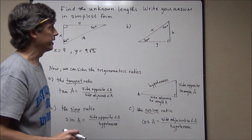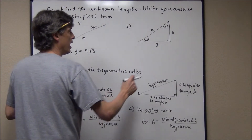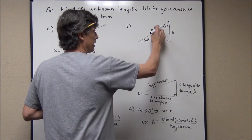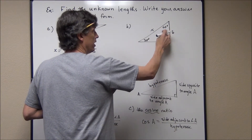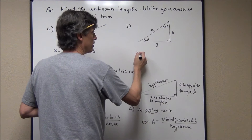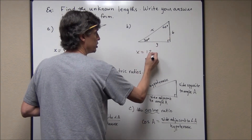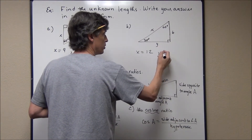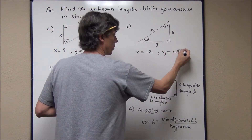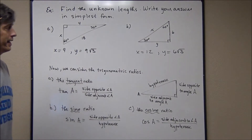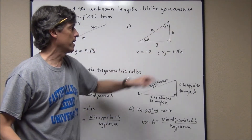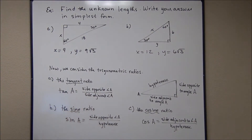In another 30-60-90, I have the shorter leg given — that's the best one to have because it's easy to find the other two. The hypotenuse is double the shorter leg, so it's 12. The longer leg y equals the shorter leg times √3, so y = 6√3. It can get more complicated if you're given the longer leg and have to divide by √3, but that's not the case in these first examples.